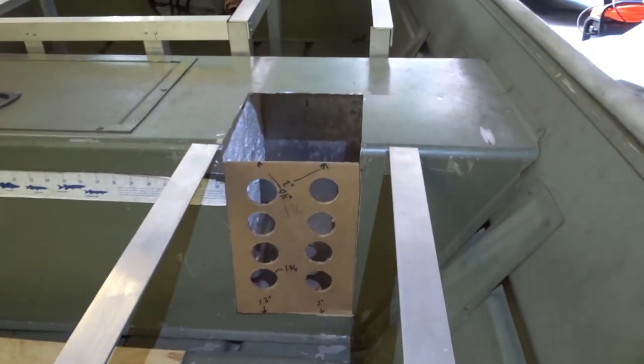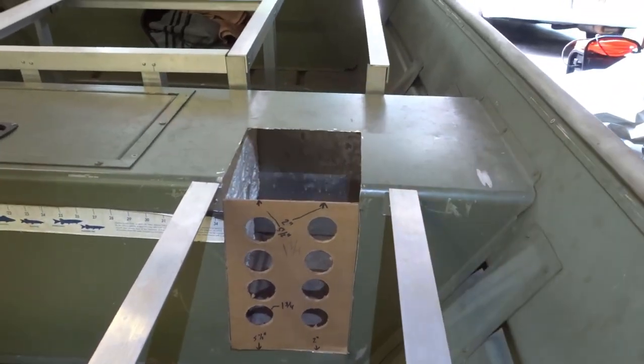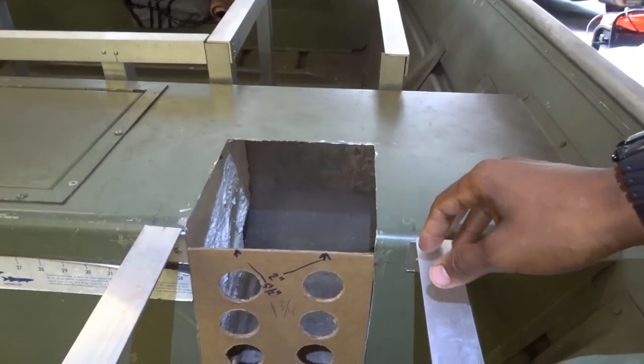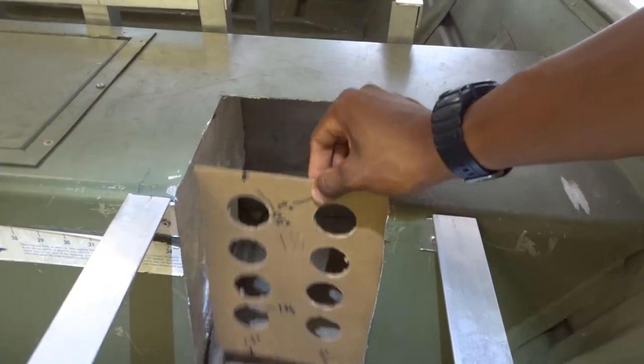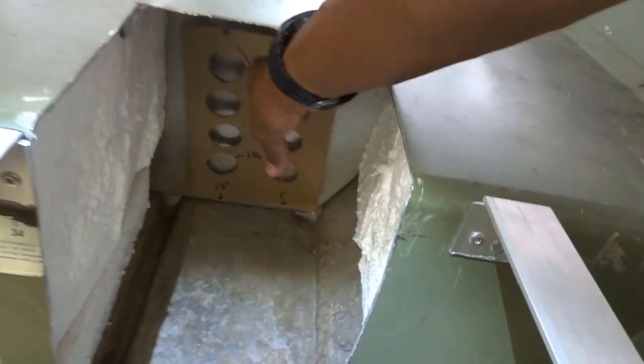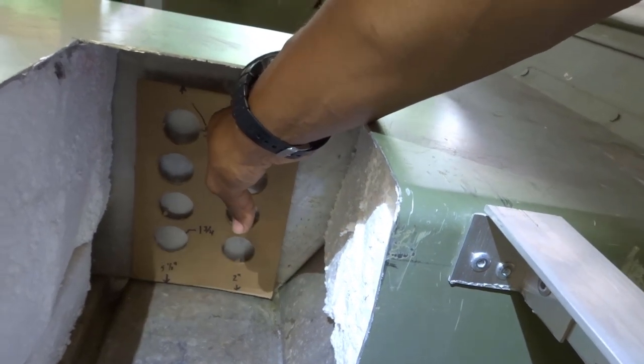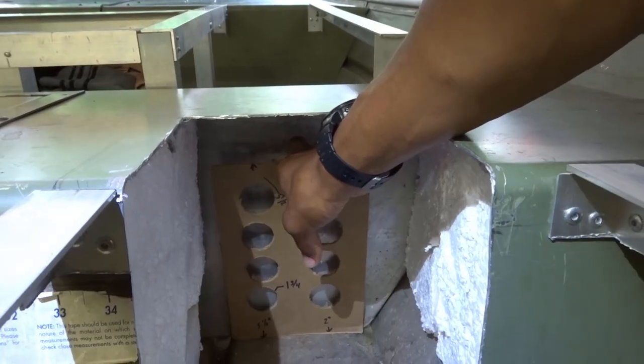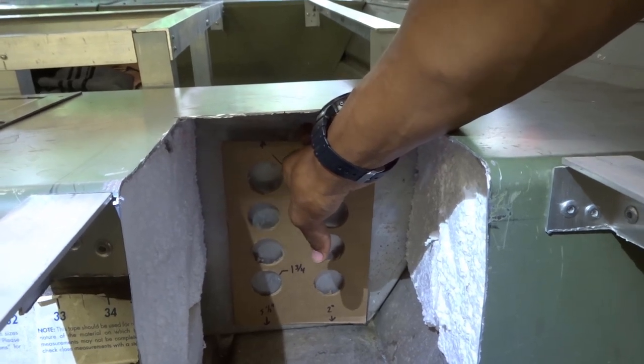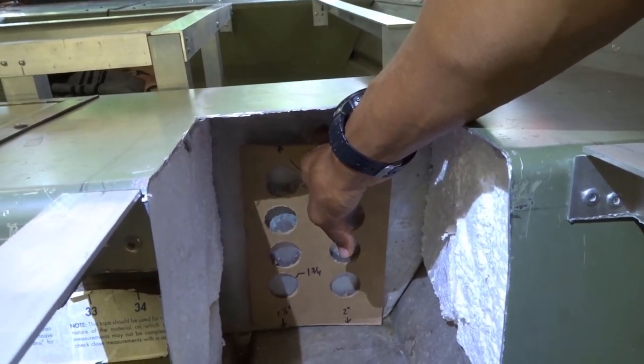So that template, like I said, that template right there is just saying that's how much space it's going to take. Now I'm going to use this template to put it up against here, draw out my holes where they need to be so I can insert my tubes. I'm going to use this template to go ahead and drill out the holes so I can slide my tubing in. And we'll go from there.